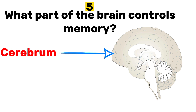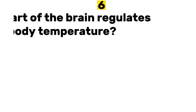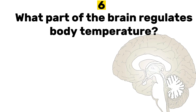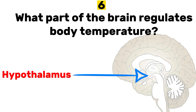Number five: what part of the brain controls memory? Number six: what part of the brain regulates body temperature? Answer: hypothalamus.